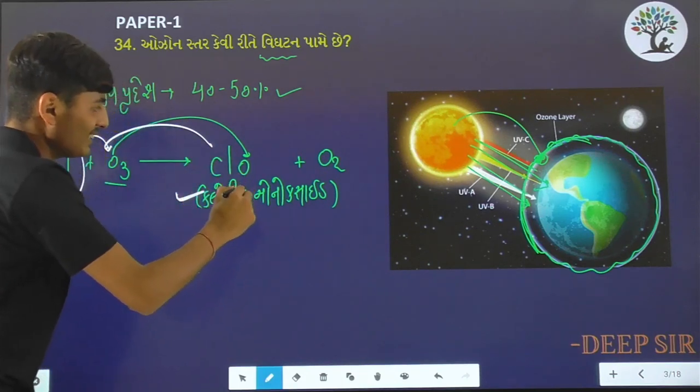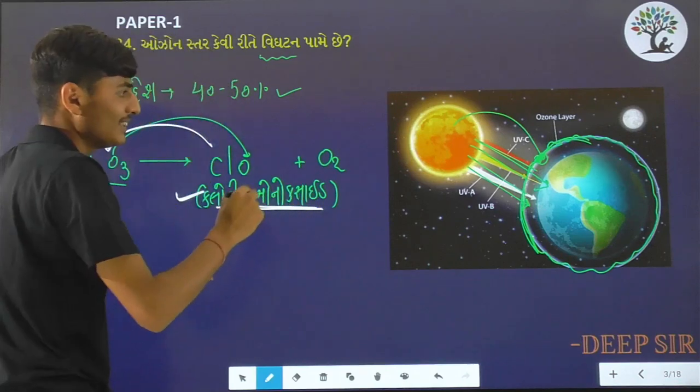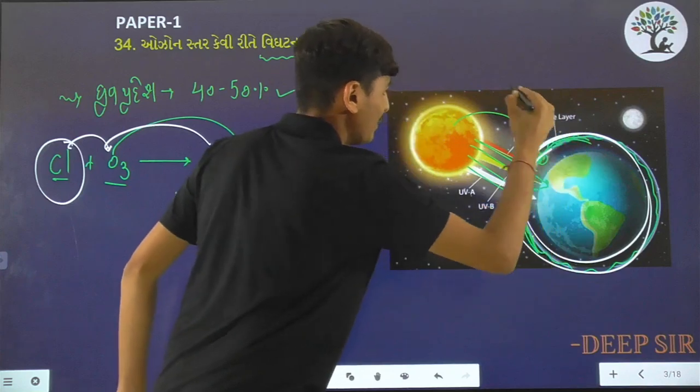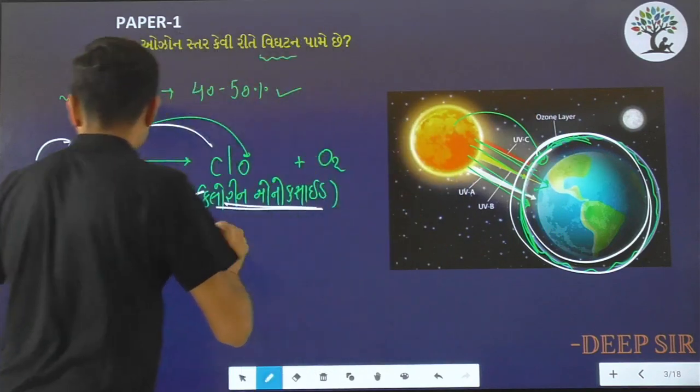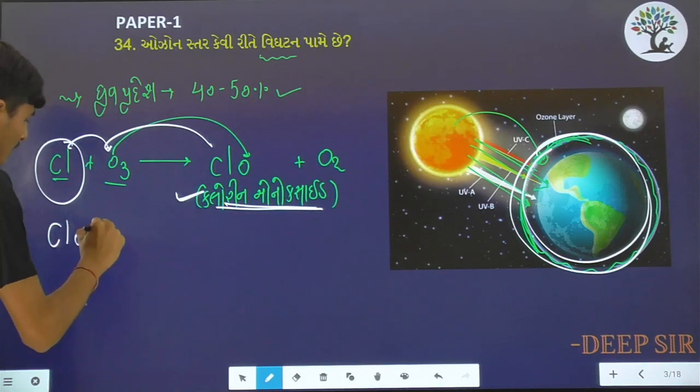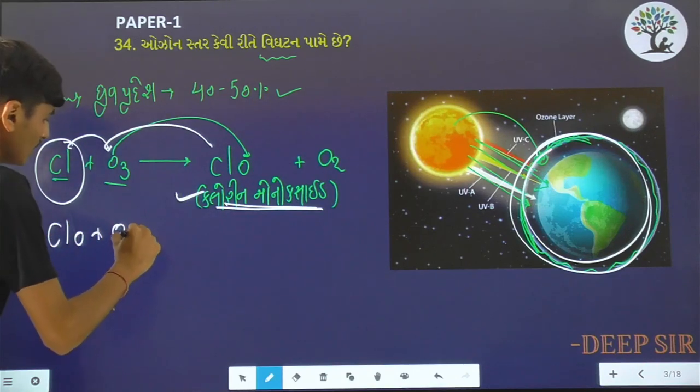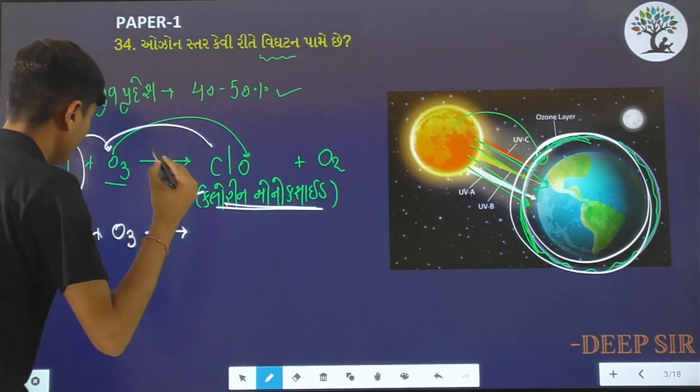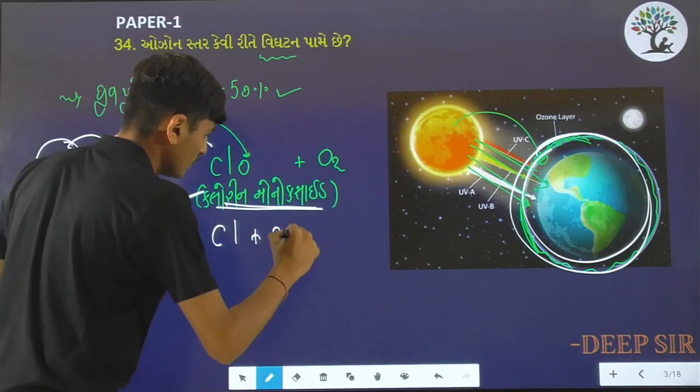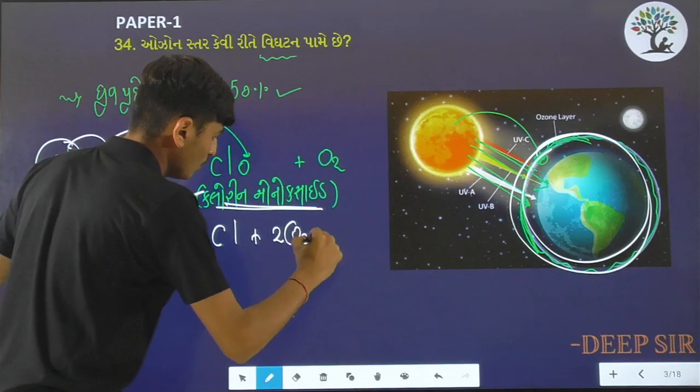This is chlorine monoxide ClO. The ozone is broken down and oxygen is produced. So the next reaction is: ClO reacts with ozone. This produces Cl plus 2O2.